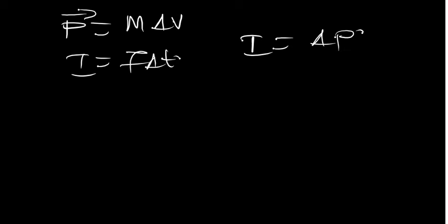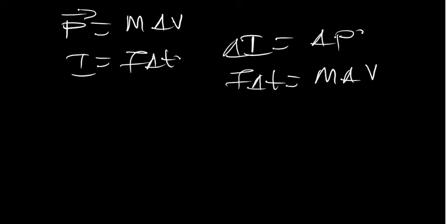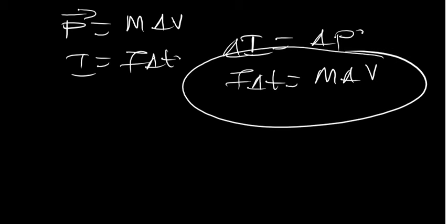In summary: momentum is mass times change in velocity; impulse is force times change in time; and impulse equals the change in momentum. So the impulse is force times Δt, which equals mass times change in velocity. You can use this to find whatever you need — if you are given mass, velocity, and time, you can find the momentum and the force.